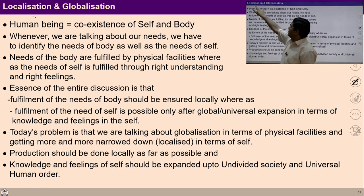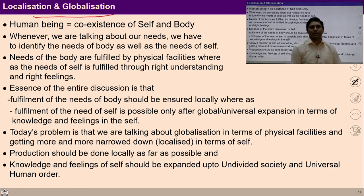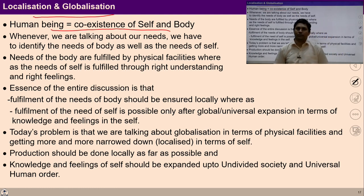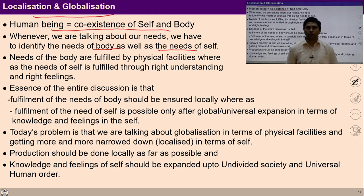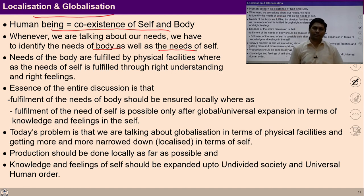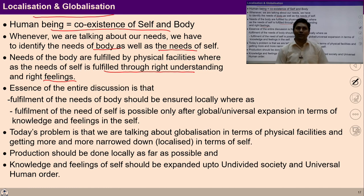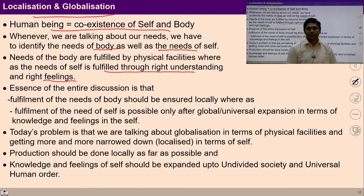The next important thing is localization and globalization. As we studied, a human being is a coexistence of self and body. Whenever we talk about the need of human beings, we talk about the need of body and the need of self both. The need of the body is fulfilled by physical facilities and materialistic things, while the need of the self is fulfilled through right understanding and right feelings. This we discussed many times during the course.